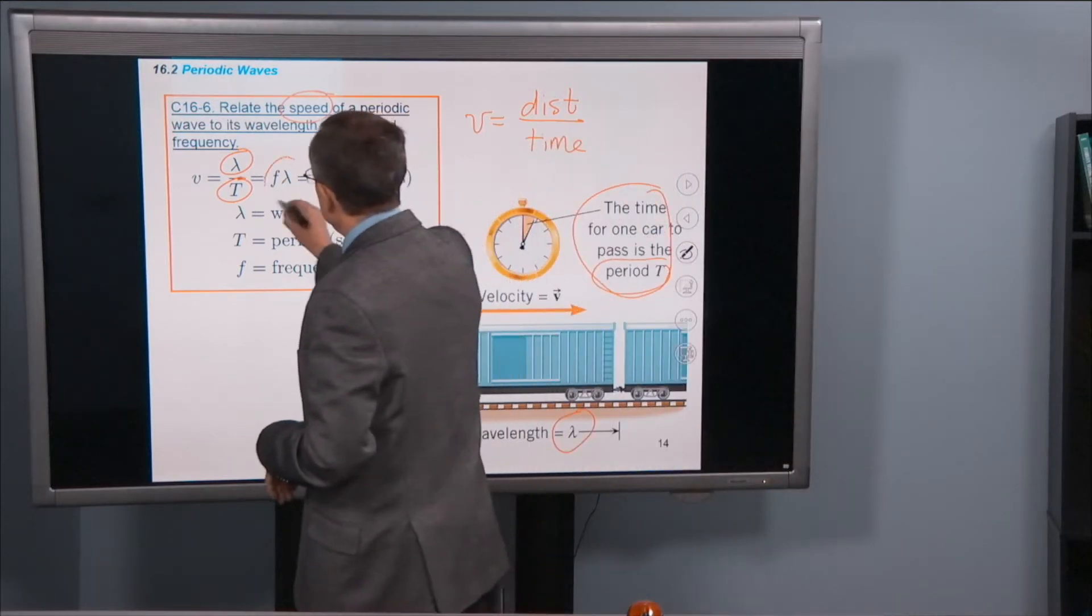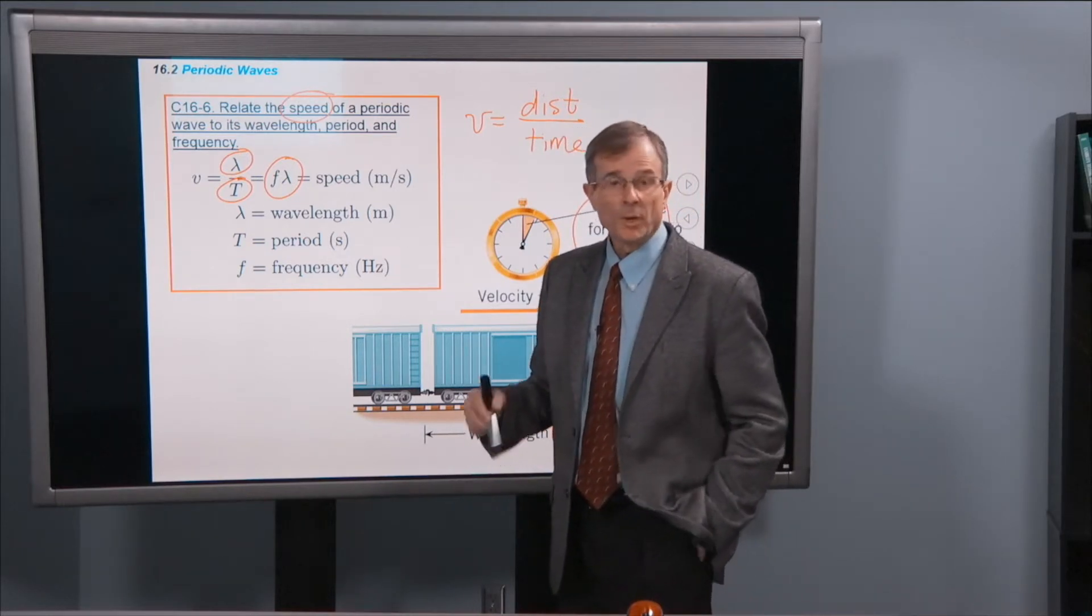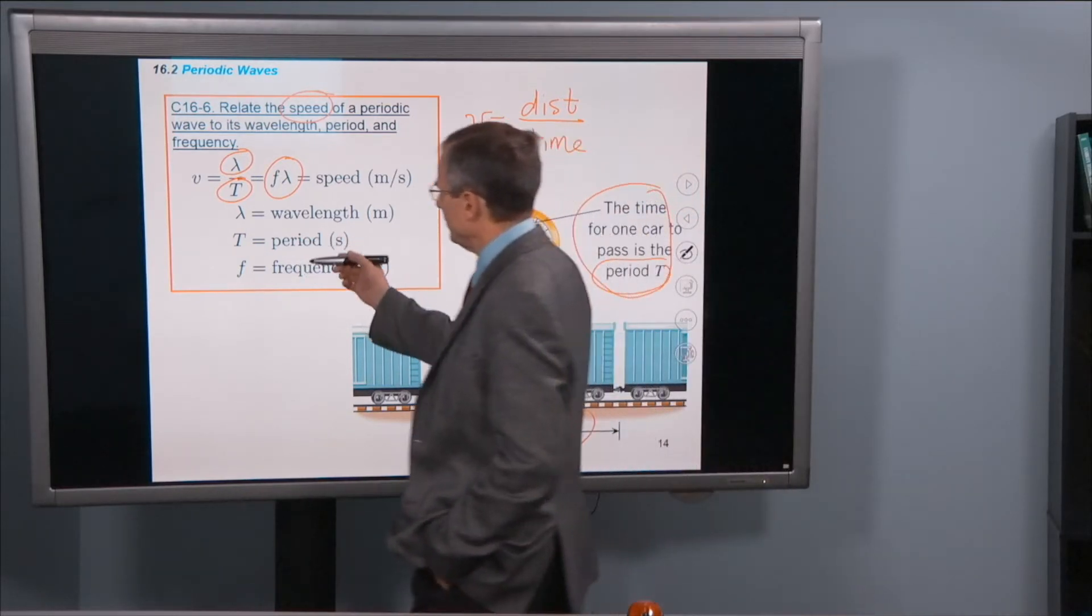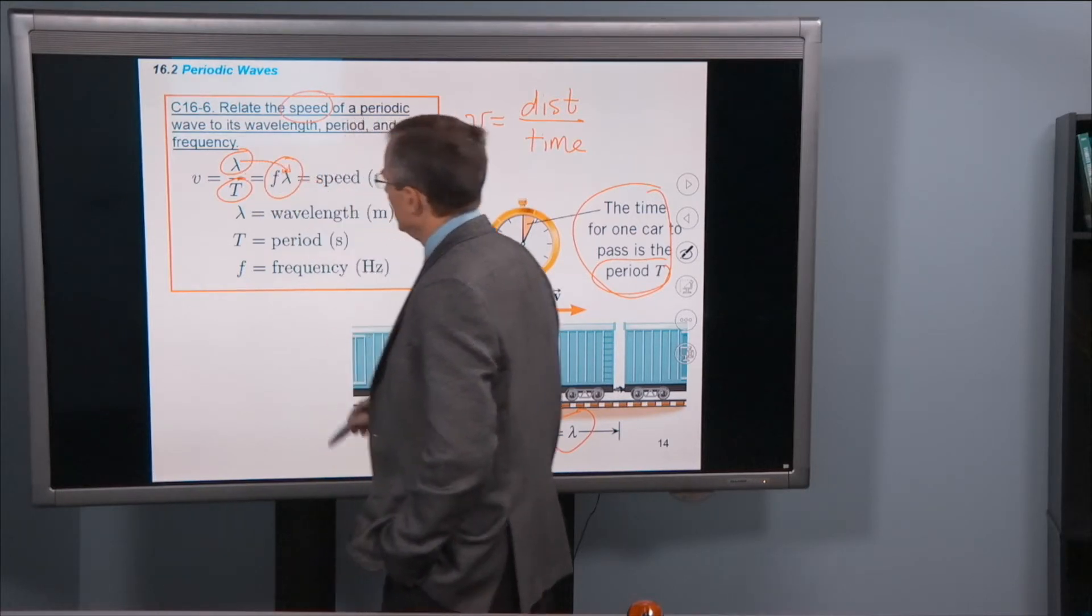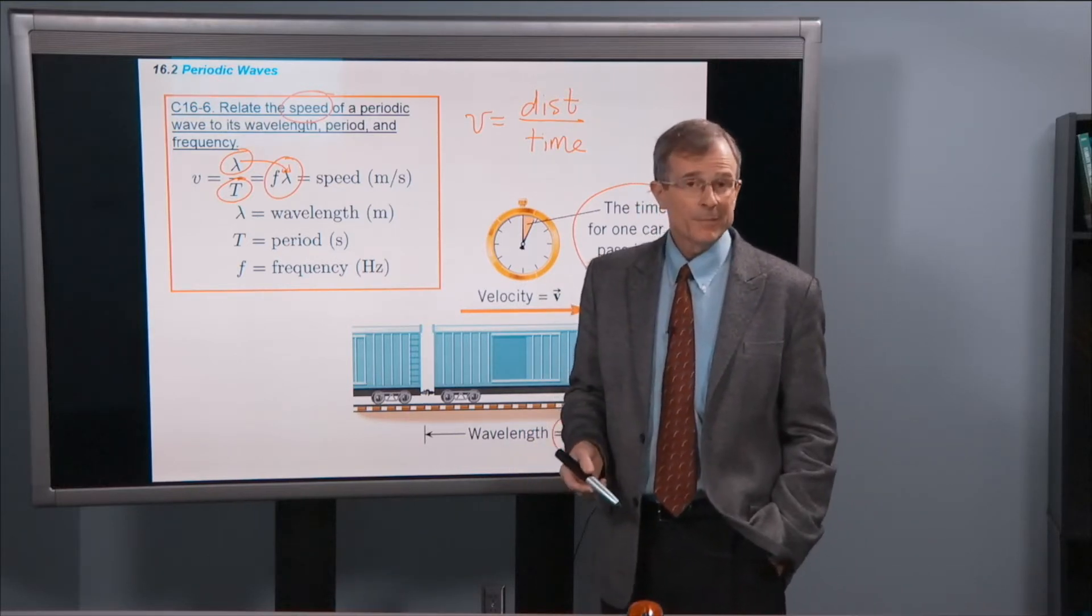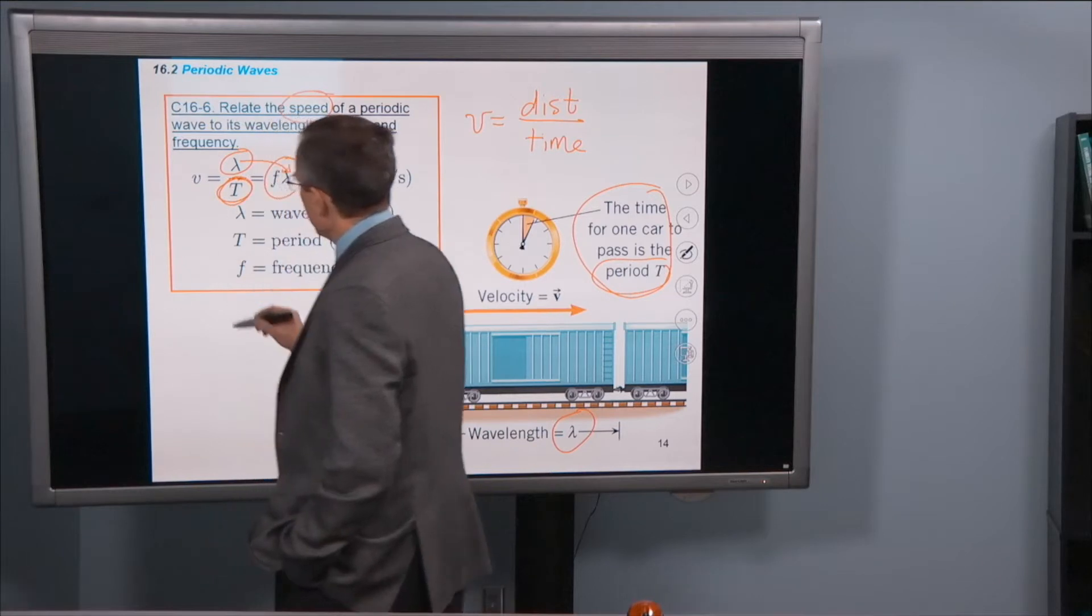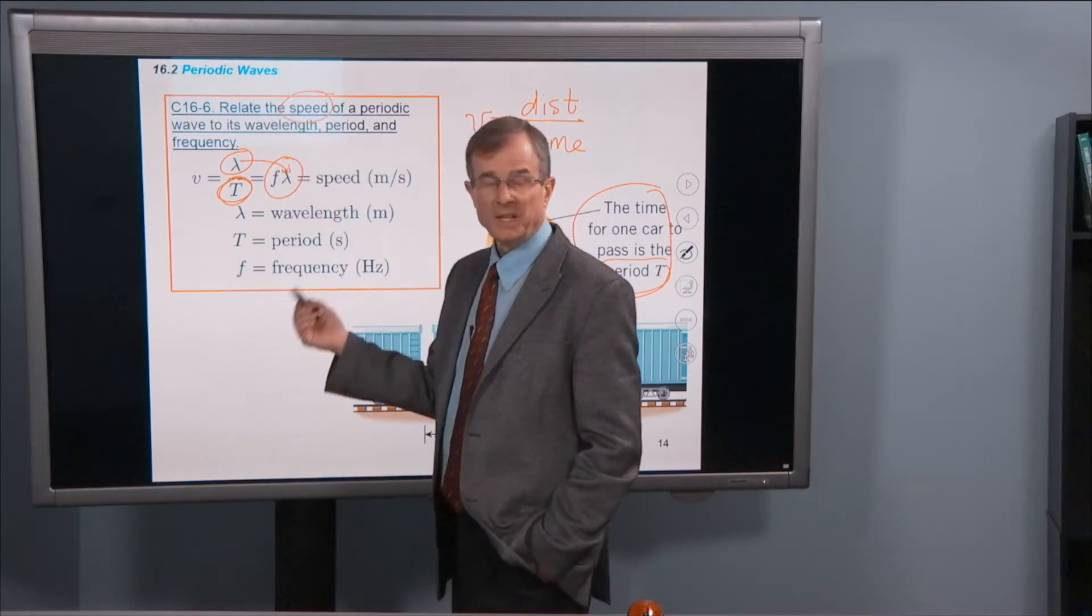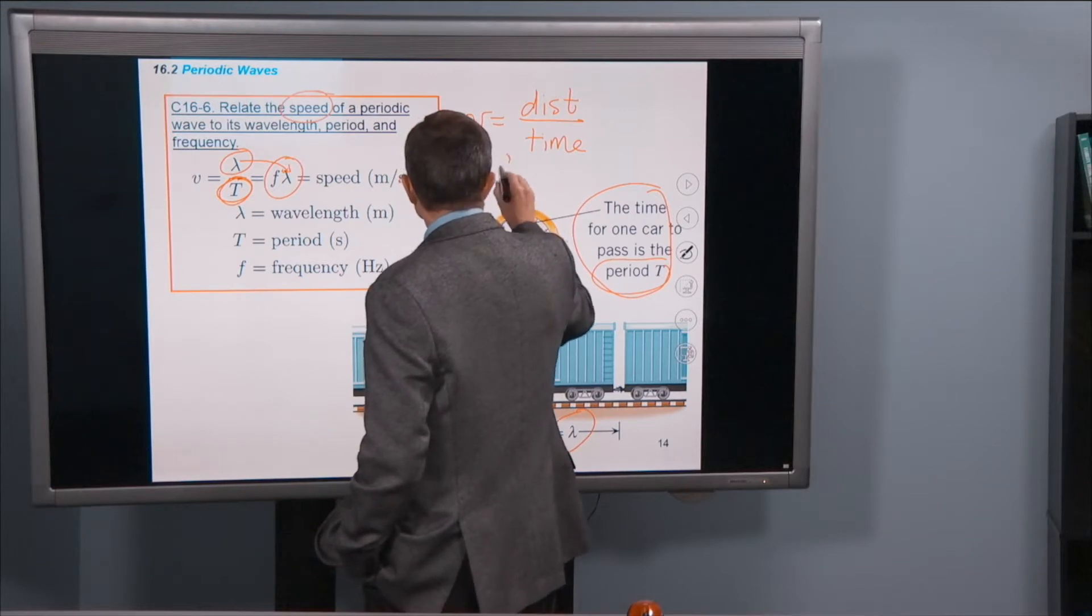And then to get to this point here, this is the one that we use more often. v equals f lambda. How do we get here? Well, the lambda just comes along for the ride. What about the f and where did it come from? Well, f is just 1 over the period. So the period here is in the denominator. We have 1 over the period and that's just the frequency. So there you go. v equals f lambda.